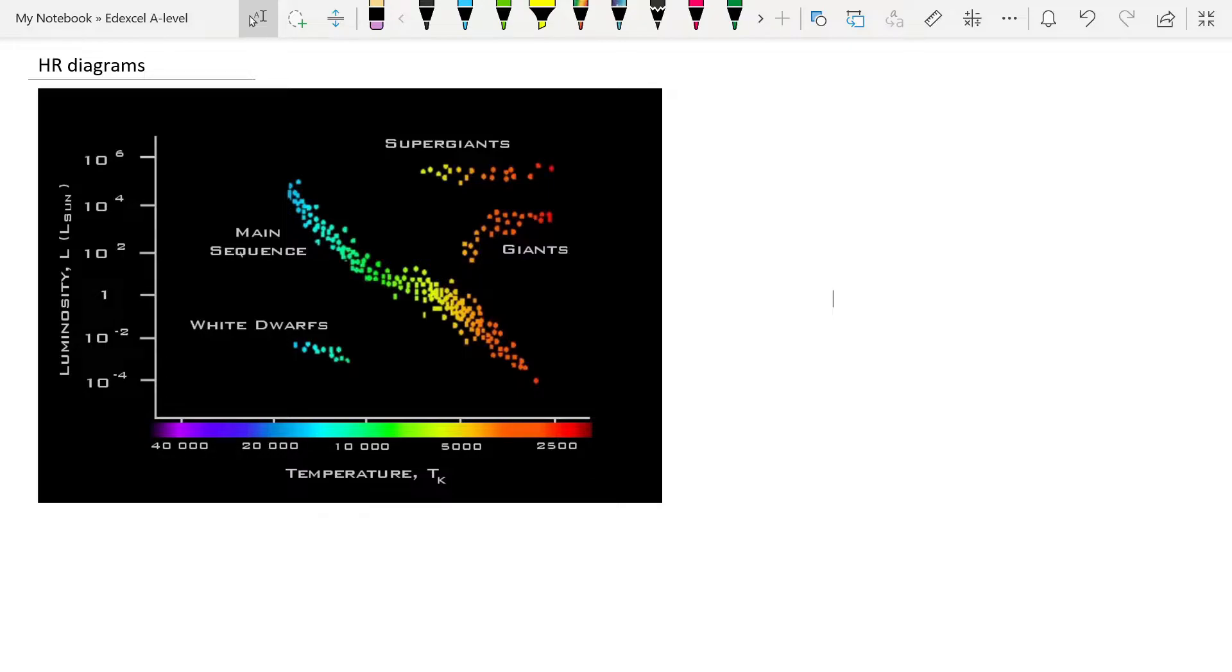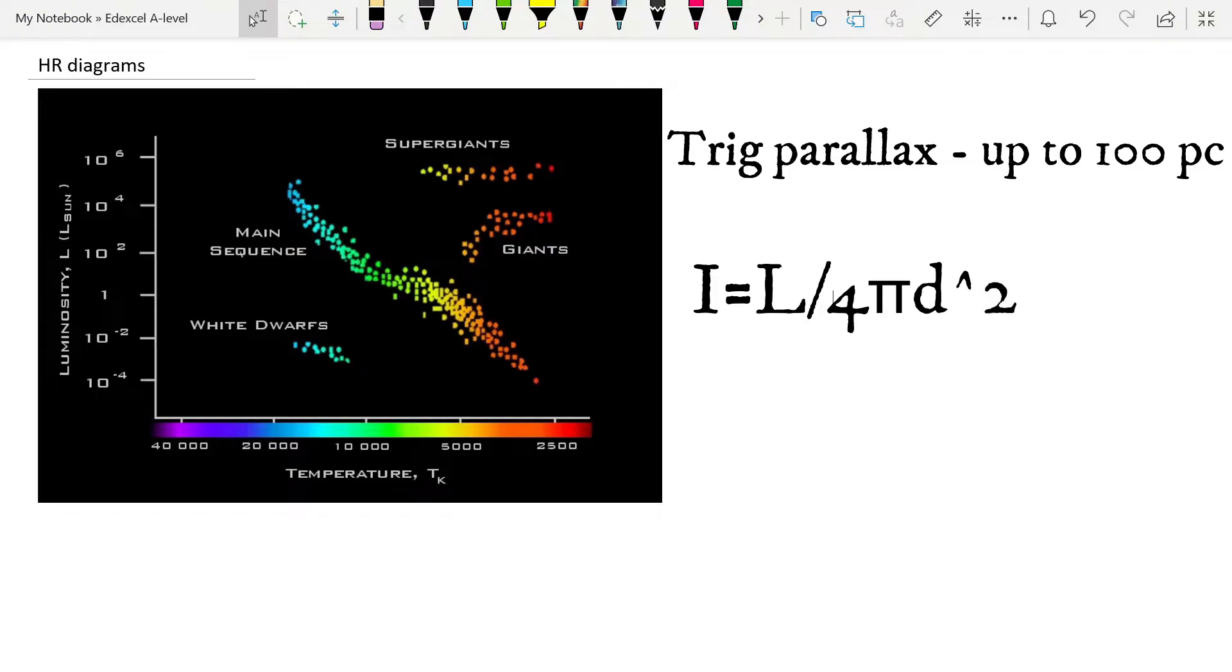So first of all we have trigonometric parallax. We can use this to find the distance to nearby stars, although that has its limits, and those limits are pretty close to the sun. The second thing we have is measuring the intensity of the light that's received from stars and using a known luminosity from standard candles to find the distance. The third thing that we have is using a combination of Wien's law and Stefan's law to find the luminosity and then using our intensity equation to find distance, and the HR diagram takes that a step further.